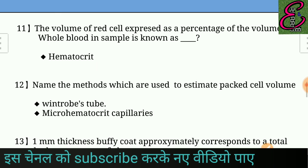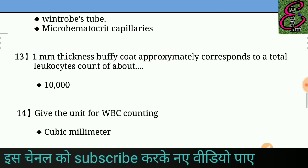Question number thirteen: A 1 mm thickness buffy coat approximately corresponds to a total leukocyte count of about — answer: 10,000.